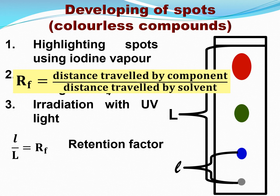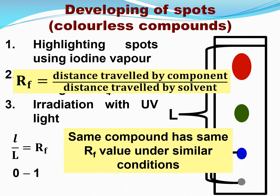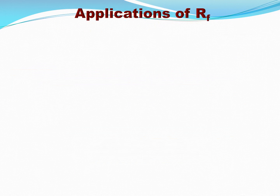The significance of the retention factor is that it allows us to identify compounds. The range of RF is 0 to 1, and the same compound has the same RF value under similar conditions. For example, if benzene has an RF value of 0.2 under particular conditions, it will always remain 0.2 under those same conditions. So we can identify different compounds based on their RF values.